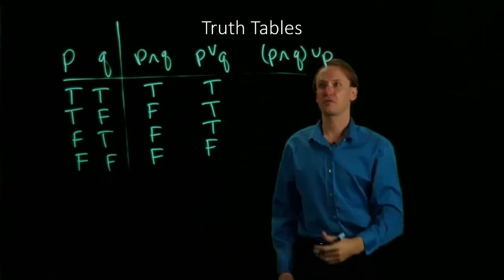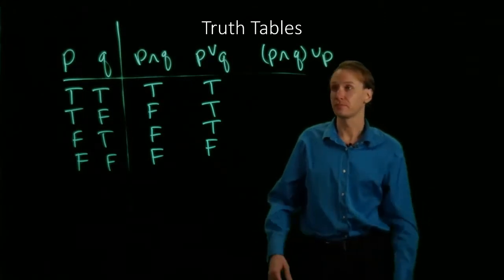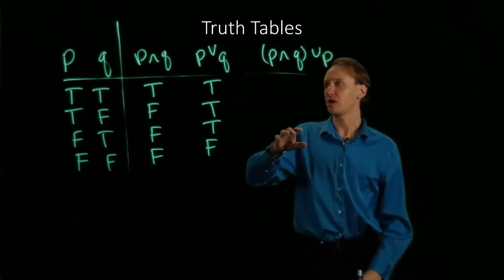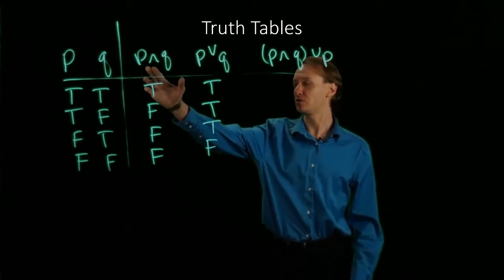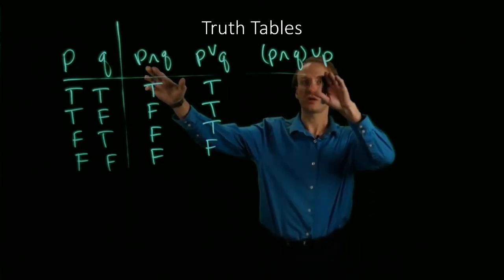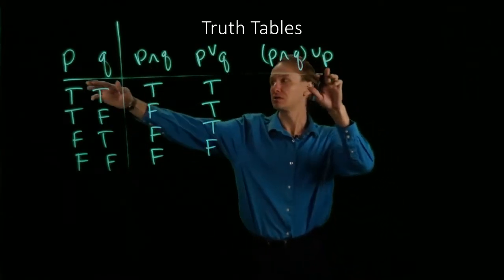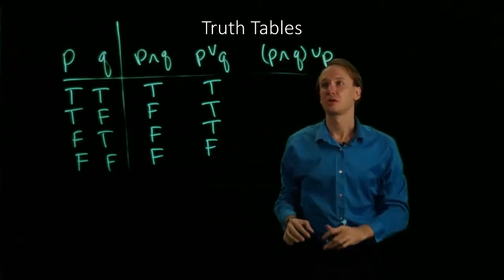Here I have (P AND Q) OR P. In this case, one of my inputs will be the P AND Q that I've got over here, and the other input, this OR, is P.